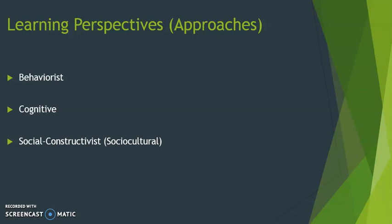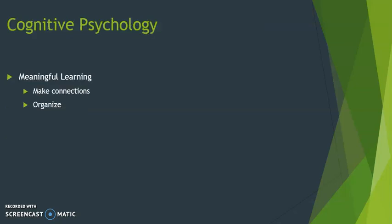So cognitive psychologists talk more about meaningful learning. We have to want to learn, either through behaviorist ideas of rewards or punishment, but also to more deeply learn. With more complicated, complex ideas, we have to organize them and make connections between ideas in order to have robust learning.